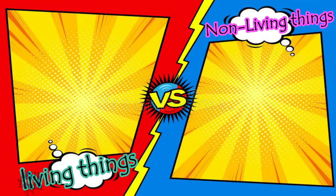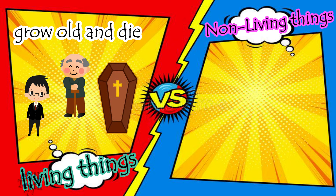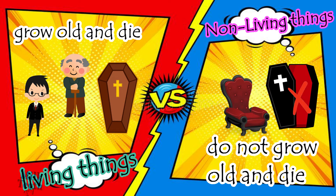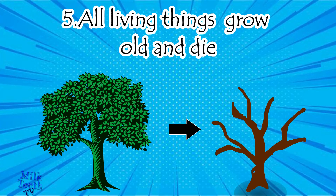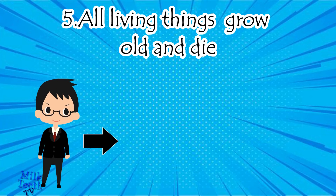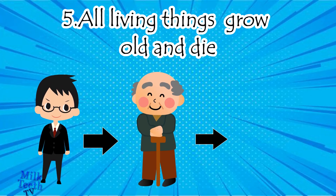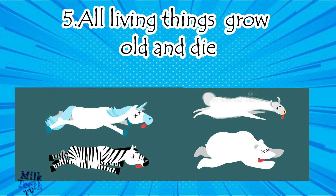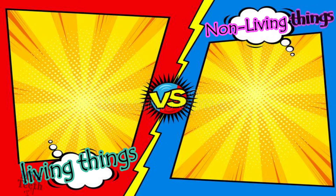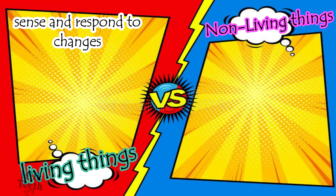The fifth difference is that living things grow old and die, whereas non-living things do not grow old and die. All plants and trees grow old and die, humans grow old and die one day, and all animals also die one day.